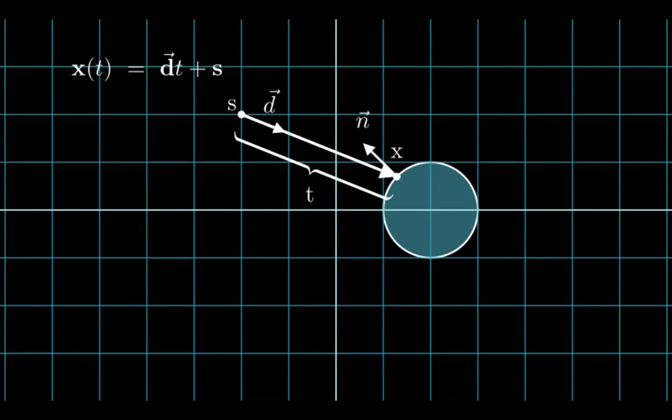In the case of a sphere or a circle, this point X is at a distance R from the center of the object. This R is of course the radius.